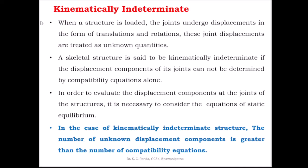First, coming to what is a kinematically indeterminate structure. When a structure is loaded, the joints undergo displacements in the form of translations and rotations. These joint displacements are treated as unknown quantities. A skeletal structure is said to be kinematically indeterminate if the displacement components of its joints cannot be determined by compatibility equations alone.